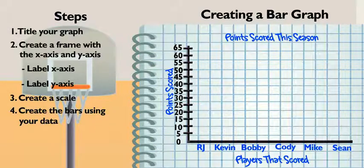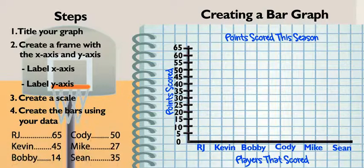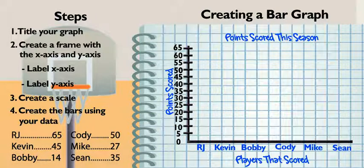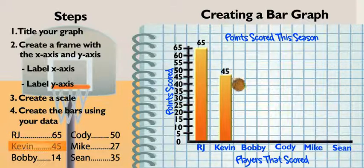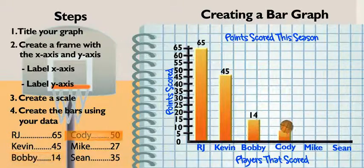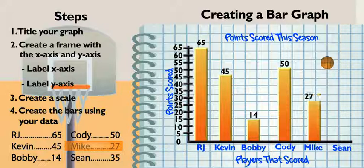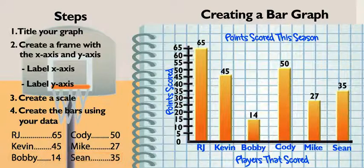Is it time to put in the data yet? Bring on the bars. All you need is to create a bar above each player's name that reaches the right number of points on the Y axis. Okay. 65 for RJ, 45 for Kevin, 14 for Bobby, 50 for Cody, 27 for Mike, and 35 for Sean.